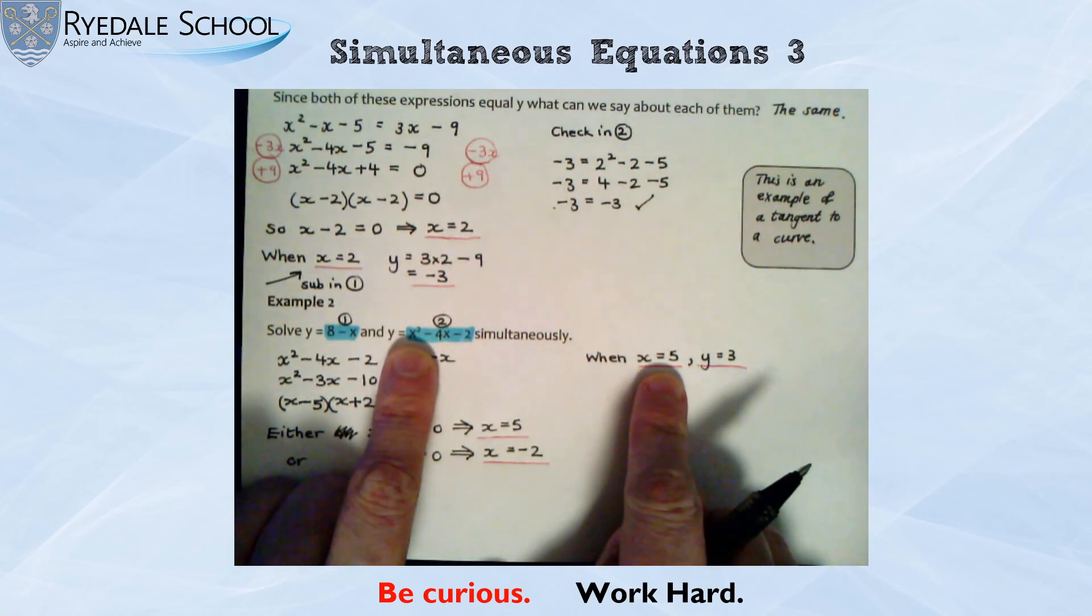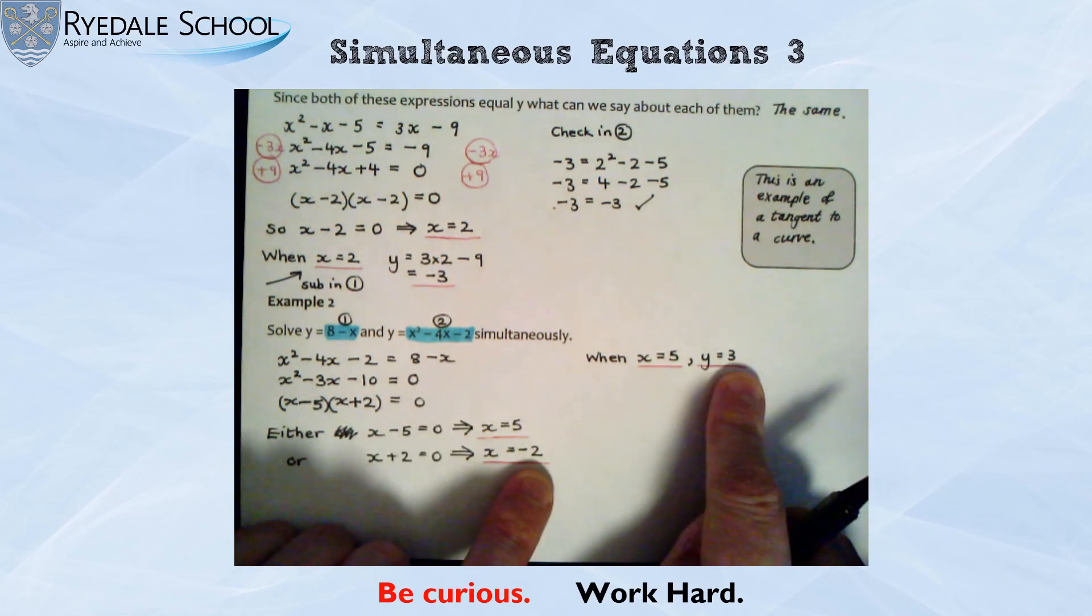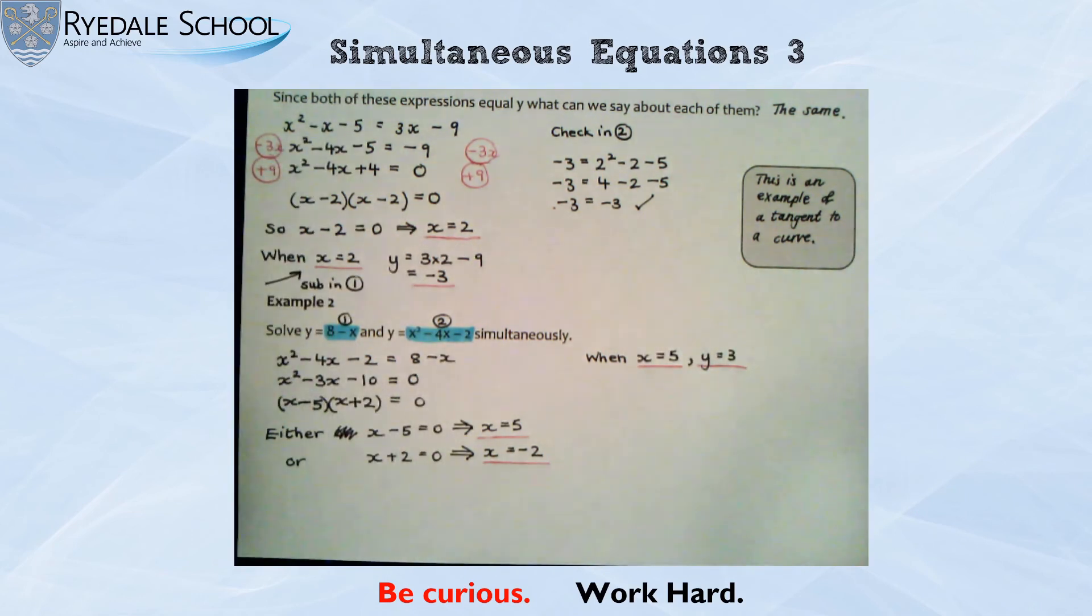So, I'm just going to do my mental check. Let's put 5 in. 5 squared, 25. Take away 4 x's. So, take away 4 5's. 4 5's is 20. So, we've got 25 take away 20 is 5. Take away 2 is 3. It equals 3. There we go. It's working in both of them.